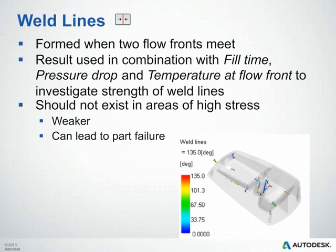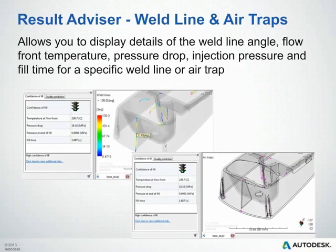The Weld Line plot shows where weld lines form when two flow fronts meet. The result can be used in combination with fill time, pressure drop, and temperature of flow front plots to investigate the strength of these weld lines. Weld lines should not exist in areas of high stress, as they can cause weak spots — for example, in bosses or fastener holes, this could lead to part failure. When investigating weld lines and air traps further, use the Results Advisor, which allows you to display the weld line angle, flow front temperature, pressure drop, injection pressure, and fill time for a specific weld line or air trap, allowing you to make a more informed decision on whether these defects are acceptable.